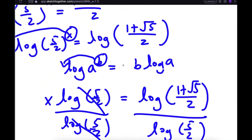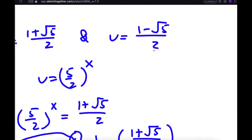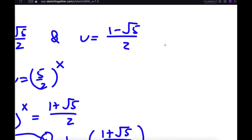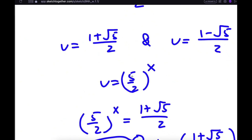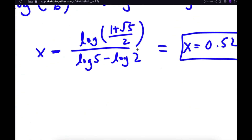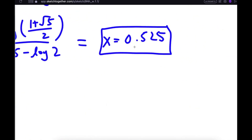For the other value of u, we have u is equal to 1 minus the square root of 5 over 2. However, this is rejected because 1 minus the square root of 5 is a negative number, and you can't take a power of a positive number and make it negative. So this has no solution, meaning our only solution for x is 0.525.